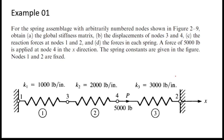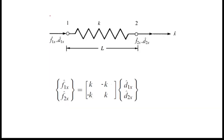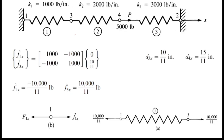Hello everyone. In this video I am going to show you how to obtain the forces in each spring. This is the fourth video of this video series. This is a typical spring, and this is a typical equation — the node numbers 1 and 2 in this spring are why the forces are labeled f1x and f2x. This equation is written for local forces and local displacements, meaning we consider a single spring, not the entire spring system.